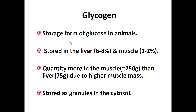This glycogen is stored either in the liver or muscle cells. The quantity of glycogen in the muscle cells is far greater than that of the liver due to the high volume of muscle cells. The amount of glycogen in the muscle cells is about 250 grams, while that of the liver is about 5 grams. Glycogen is stored in the form of granules in the cytosol.